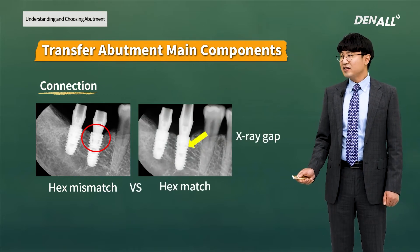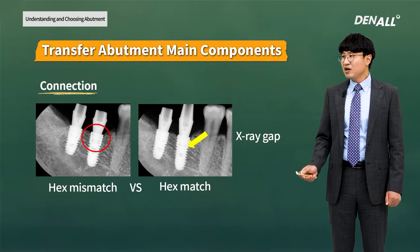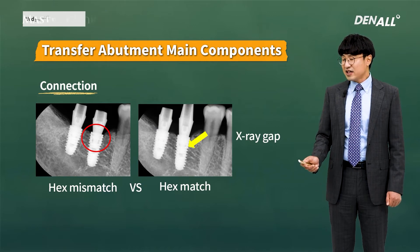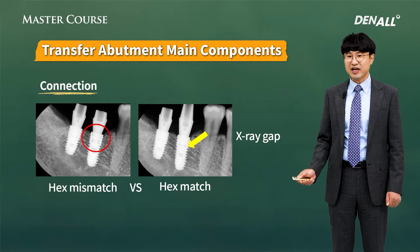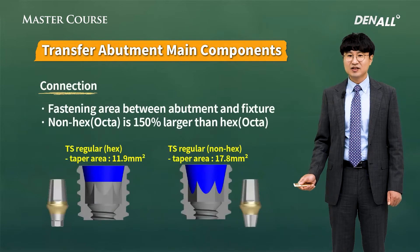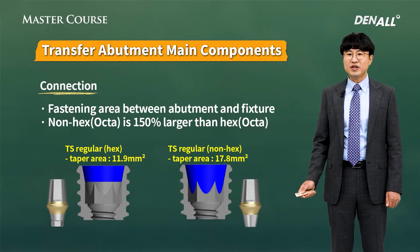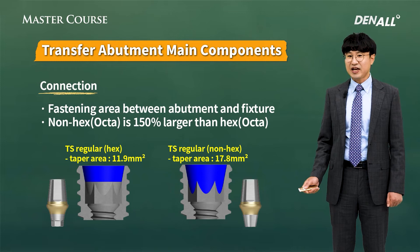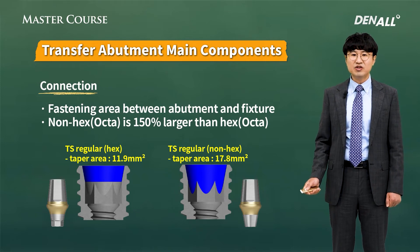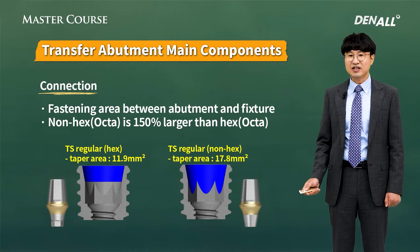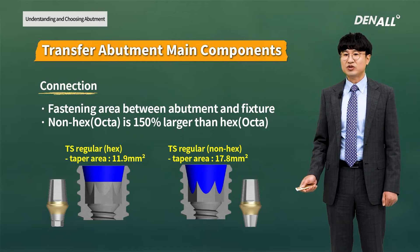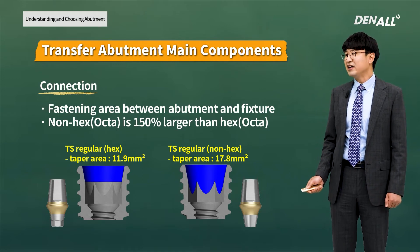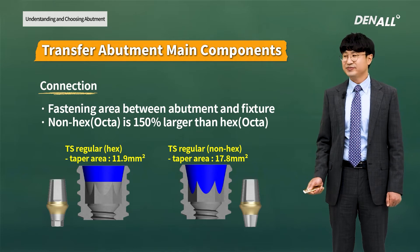The right x-ray shows proper hex connection. As the first abutment hex was not connected properly, with another stock abutment the hex is properly connected again. For non-hex, there are positioning difficulties, but there is another advantage: almost no chance of making a hex mismatch, which is the biggest advantage. There is less room for making a mistake. And it has a higher contact area with the fixture, so the lifespan is longer according to research results.